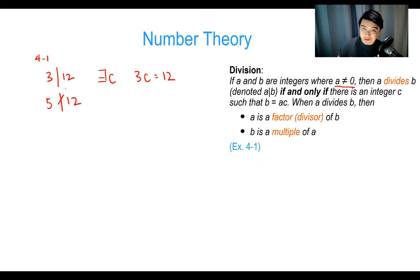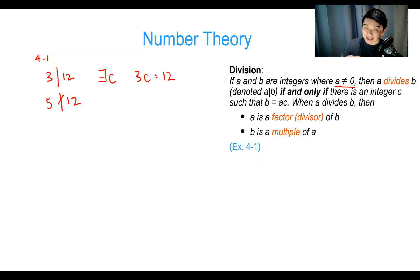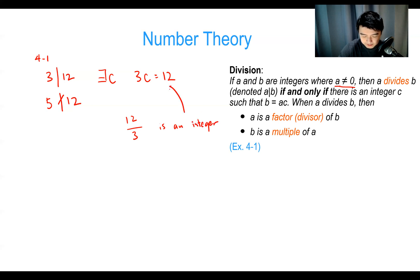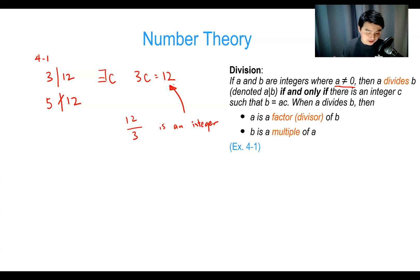There are other ways to express this as well. Another way to look at it is that B divided by A is an integer. So 12 divided by 3 is an integer — that is another way of saying three evenly divides 12. In such a case, we call A the factor or divisor of B, and B is the multiple of A. So three is a factor of 12, and 12 is a multiple of three.